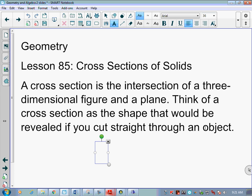We're talking about cross-section of solids. A cross-section is the intersection of a three-dimensional figure and a plane. Think of a cross-section as the shape that would be revealed if you cut straight through an object. If we took a geometric solid like a cone or a pyramid or a cube or a prism and we sliced it, we might slice it at an angle, horizontally, vertically, down the middle, or off part of the side. What we're talking about, the cross-section, is the outline of that figure that we get as a result of cutting it.